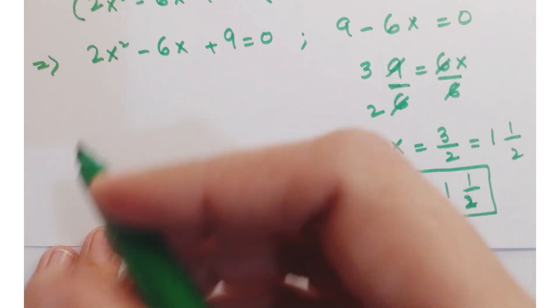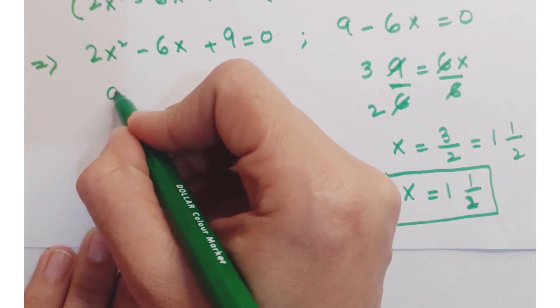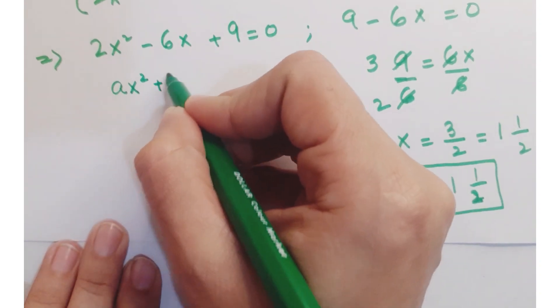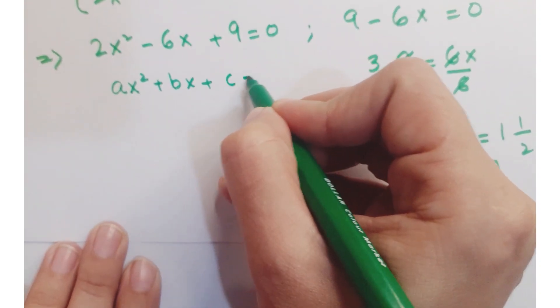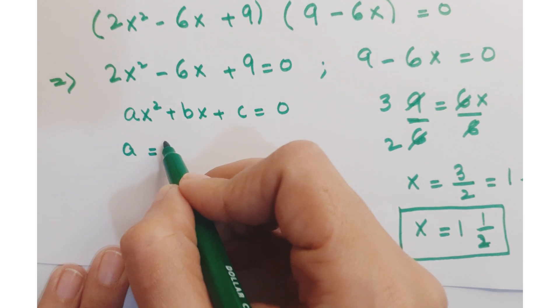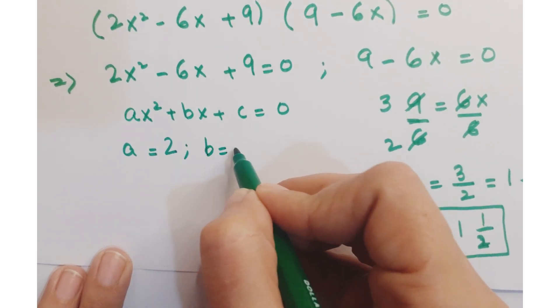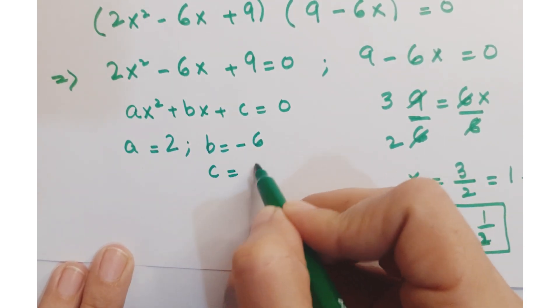Now you can solve this equation using the standard quadratic formula. First of all, compare it with the standard quadratic equation. So we have a is 2, b is minus 6 and c is 9.